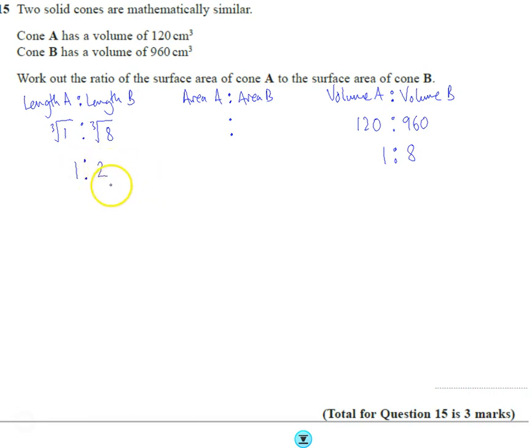If the lengths are 1 to 2, so if the length of B is twice as big as the length of A, that means the volume is going to be eight times bigger.